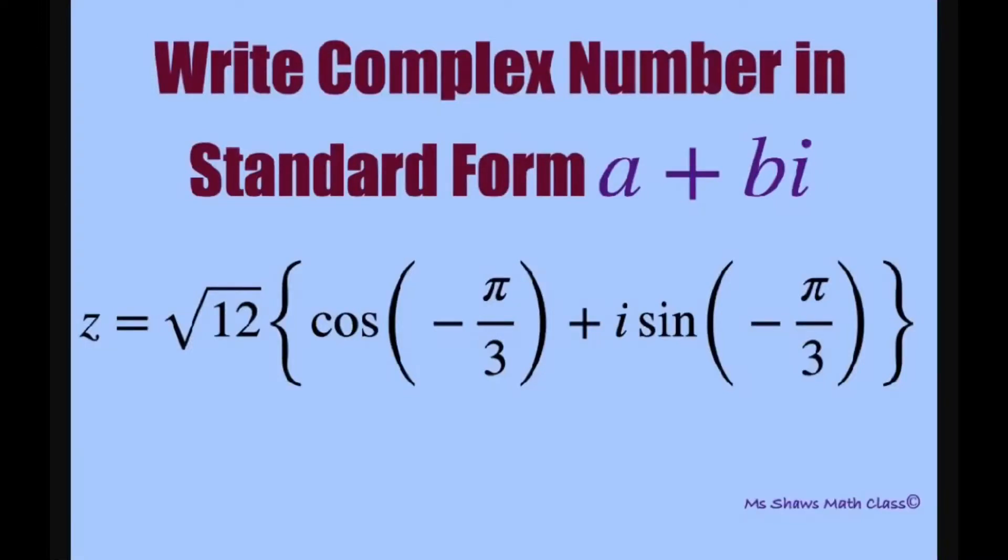Hi everyone, we're going to write our complex number in standard form, which is a plus bi. We have square root of 12 times cosine of negative pi divided by 3 plus i times sine of negative pi divided by 3.